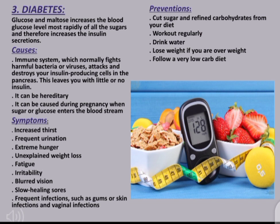Diabetes: Glucose and maltose increase blood glucose levels most rapidly of all sugars and therefore increase insulin secretions. Causes include the immune system attacking and destroying insulin-producing cells in the pancreas, leaving little or no insulin. It can also be hereditary, or it can occur during pregnancy when sugar or glucose enters the bloodstream.